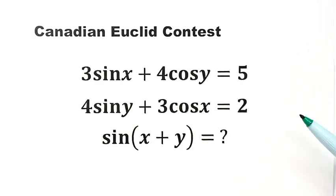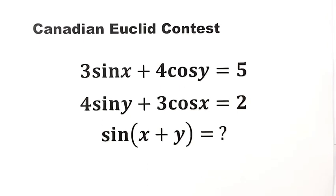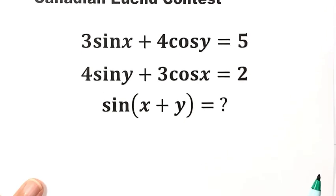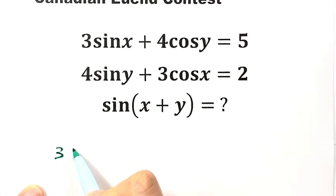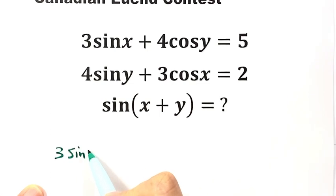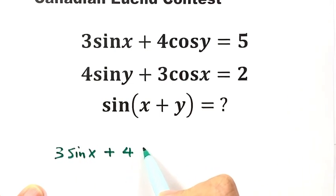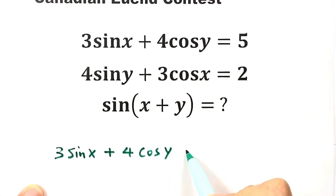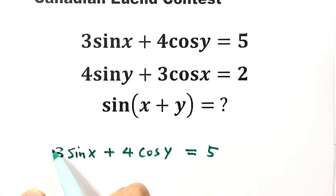Now let's start from the first equation: 3 sin x plus 4 cos y equals 5. Let's square both sides.